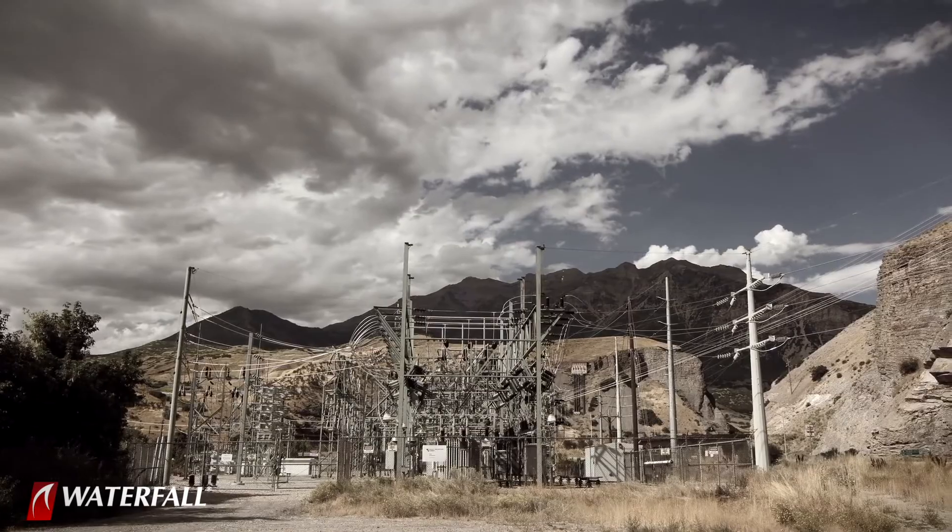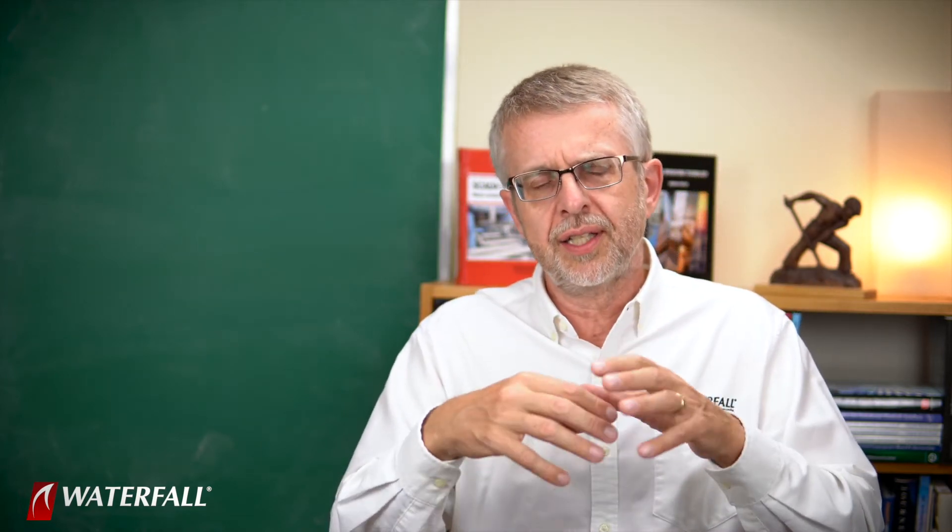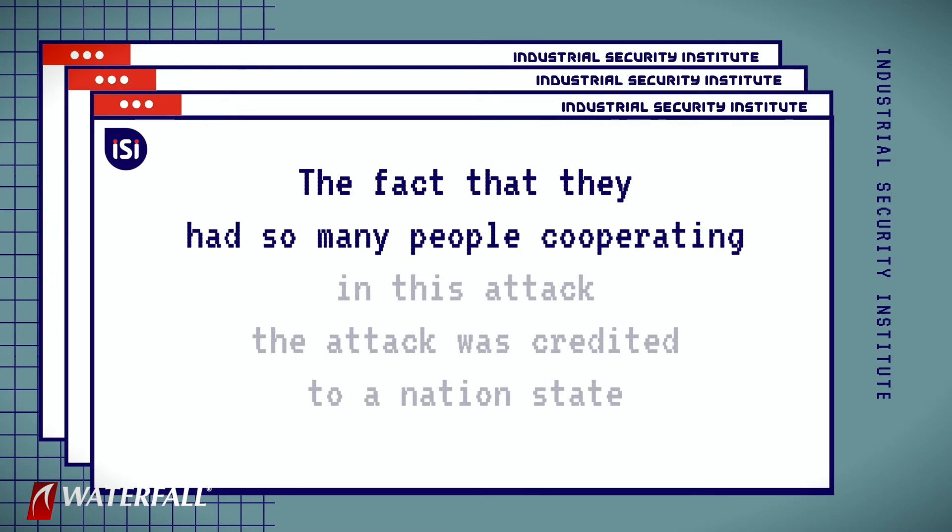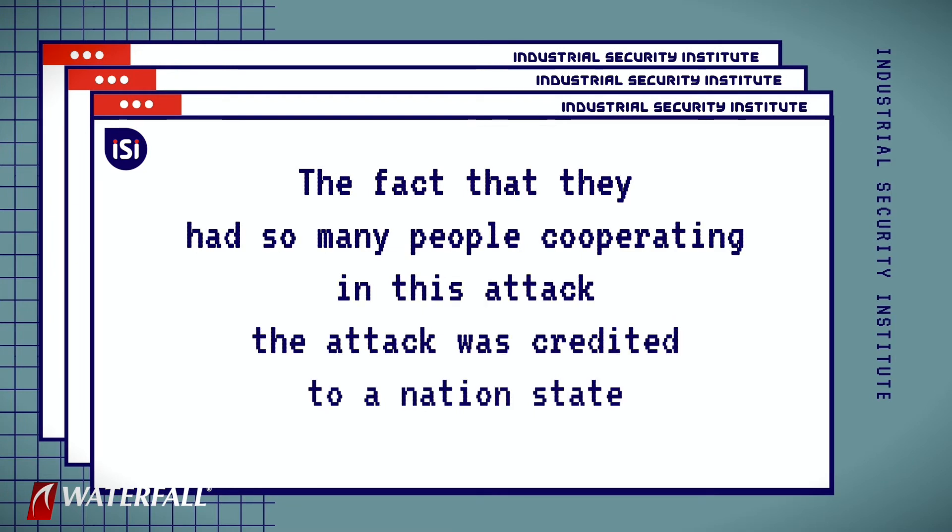When technicians reached a compromised substation, they physically unplugged power to all the computers and then manually moved the bus bar to restore power flow. The point is that with that many attackers cooperating — even though every technique they used could be downloaded from the internet or was just a stolen password — and not investing in serious attack automation the way a nation state would, the sheer number of cooperating people is what got the attack credited to a nation state.